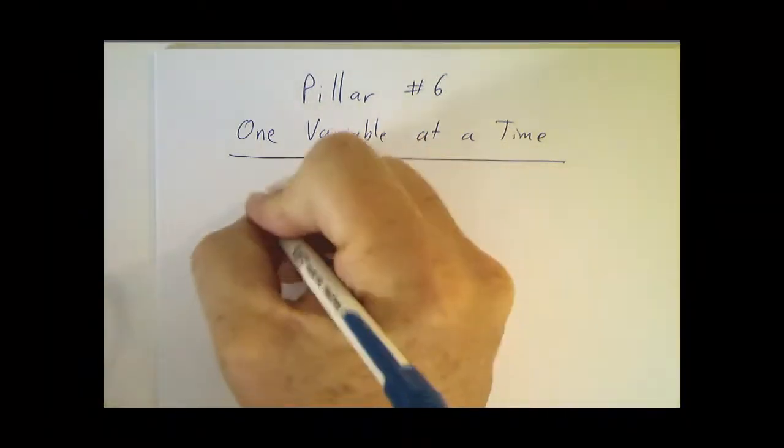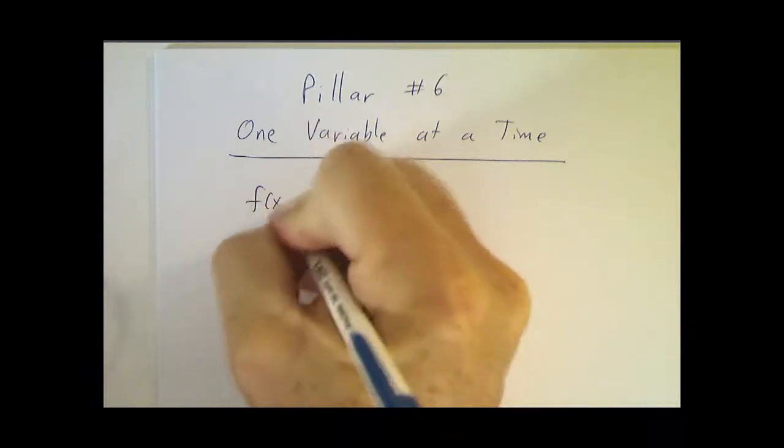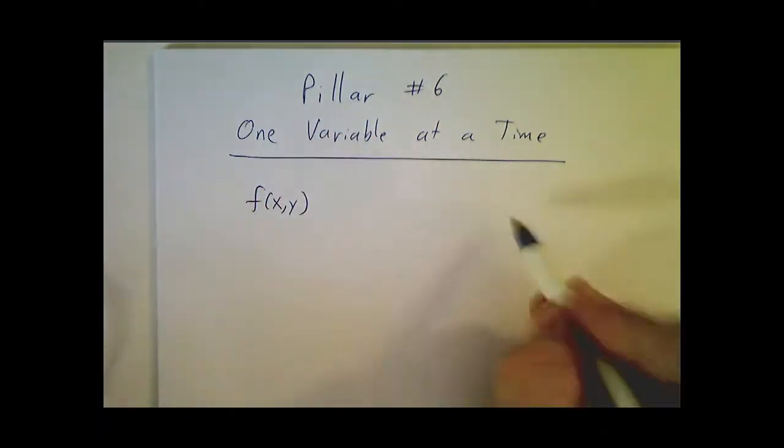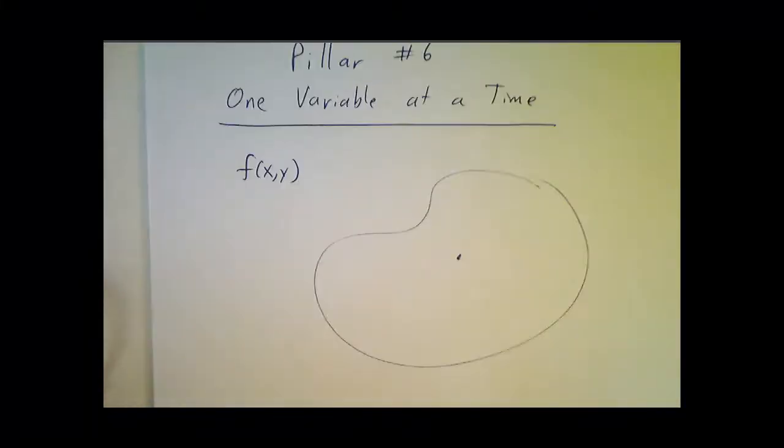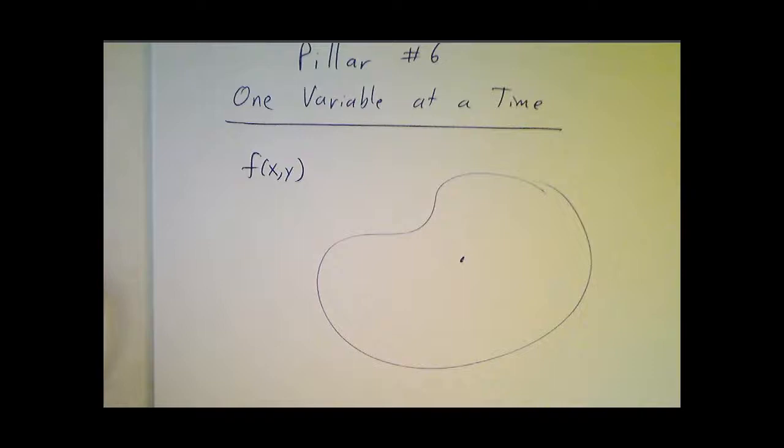So let's suppose we got a function of two variables. We got a function that depends on x and y. It's defined in this region over here. Here we are sitting at a particular point, and we want to understand how that function is changing.